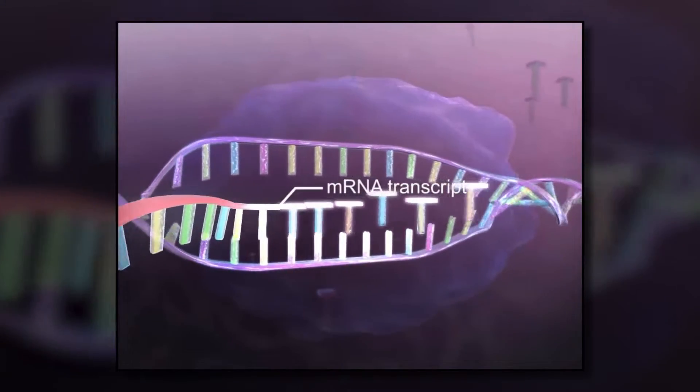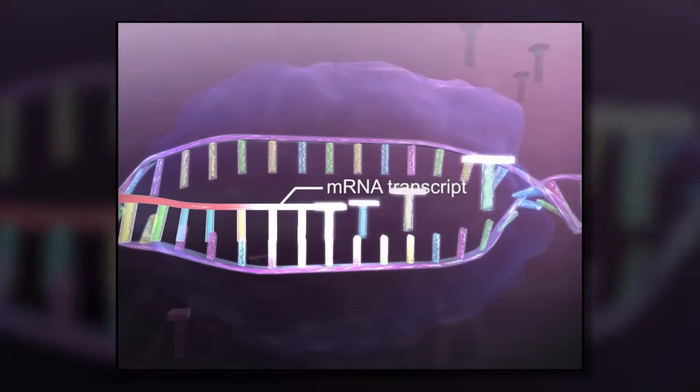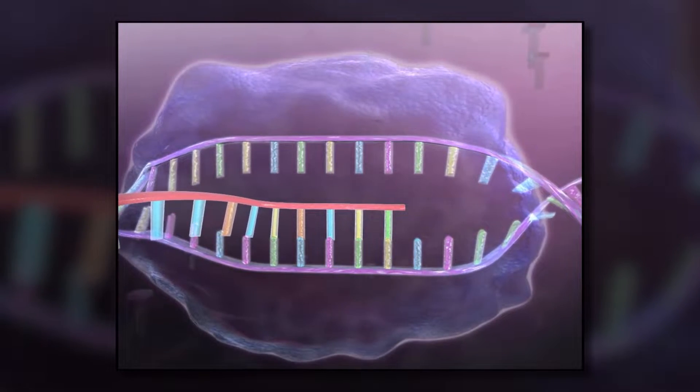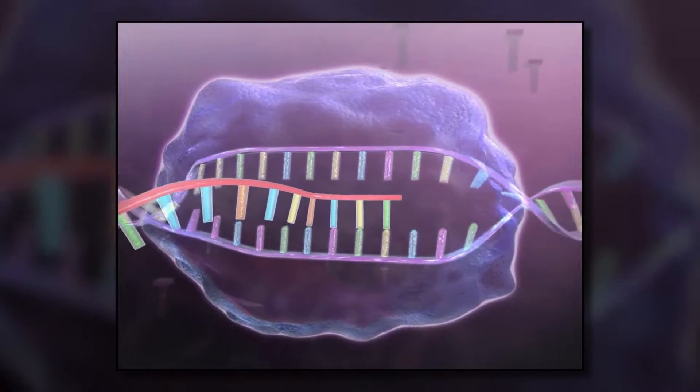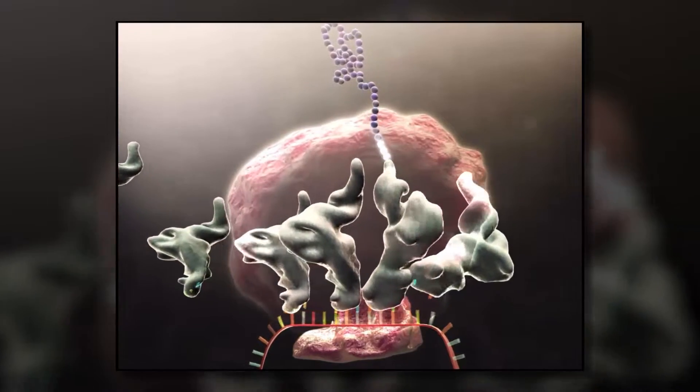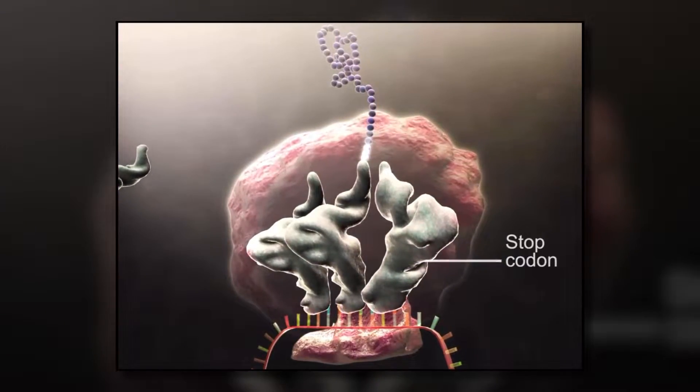Let's start with the makers. Remember the central dogma from an earlier video? The central dogma is where DNA is used to create proteins through the processes of transcription and translation. The cell's nucleus is where the DNA is transcribed into mRNA. That mRNA then moves to another maker, the ribosome, where it's translated into a protein.